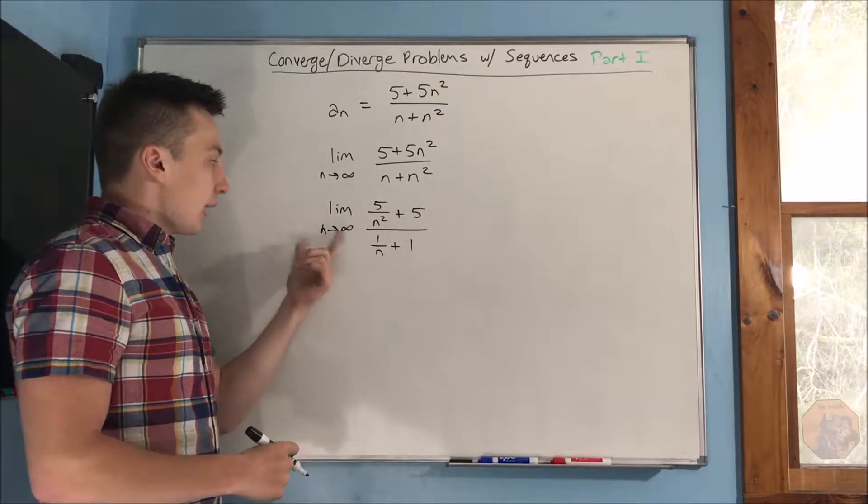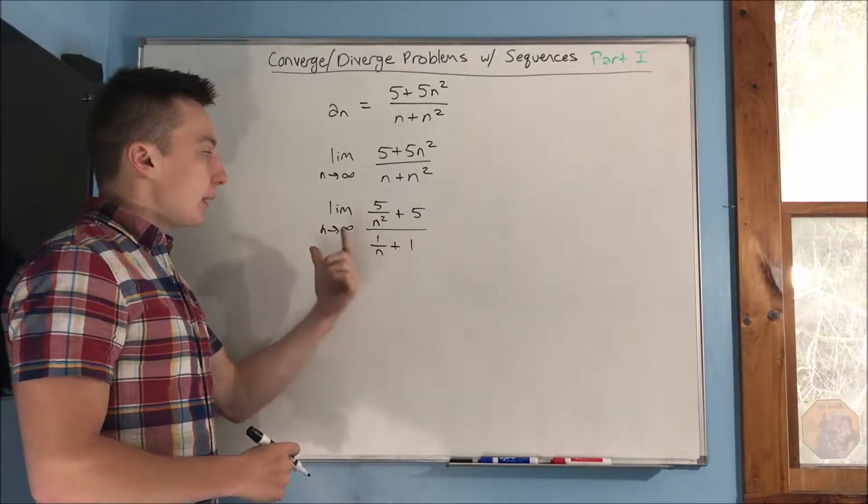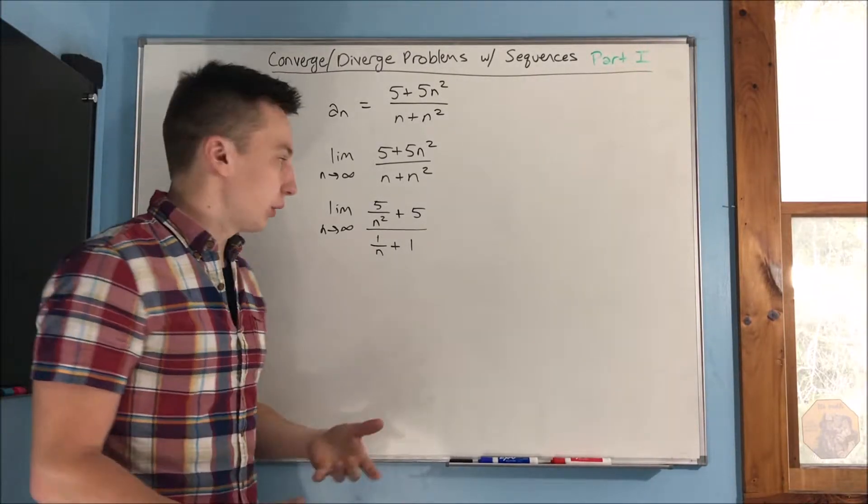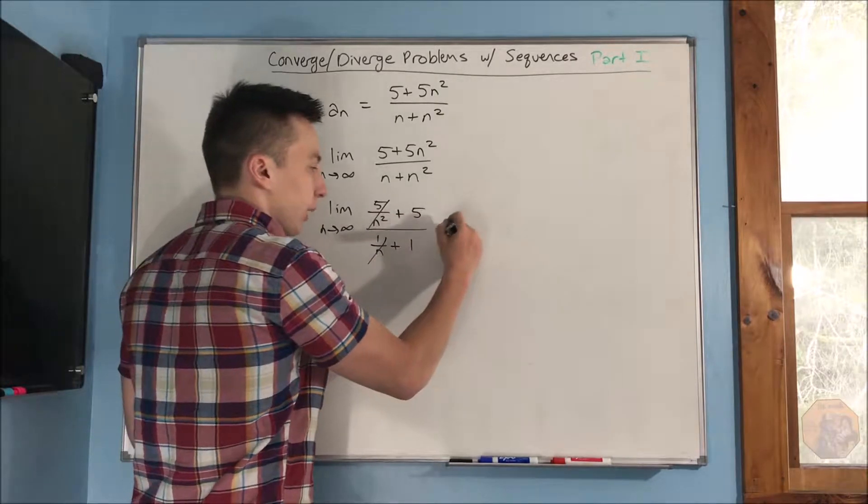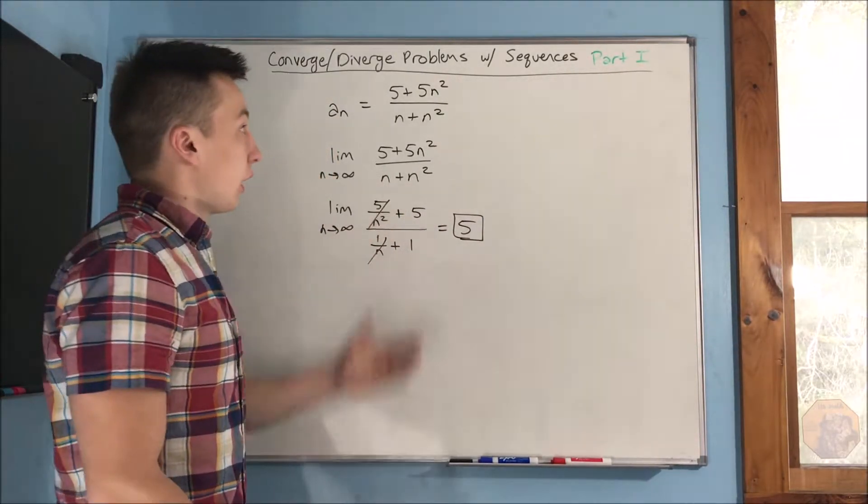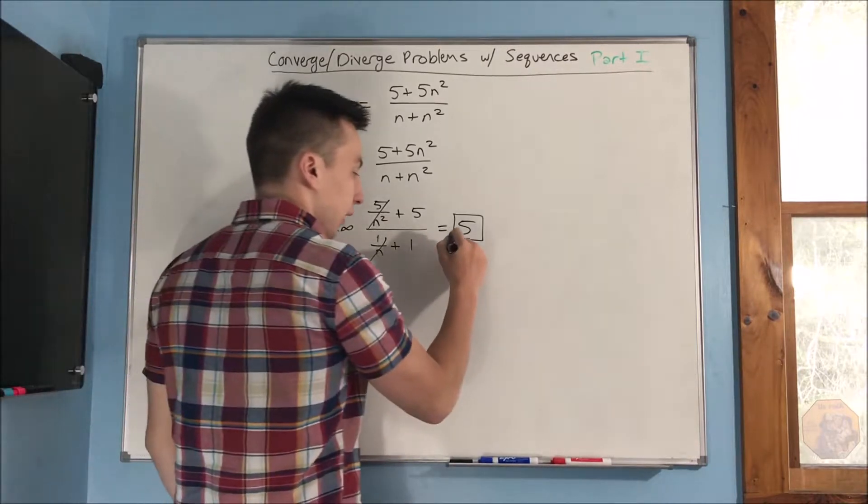So, then if we take that limit as n approaches infinity, what happens is that anything with n on the bottom, that's just going to become 0. So this goes away and this goes away and we end up with 5. So this sequence would end up being convergent.